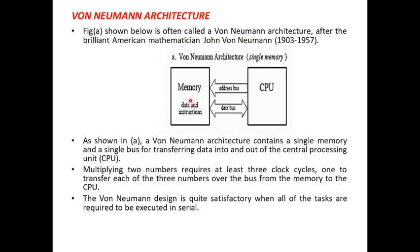In von Neumann architecture, data memory and program memory are the same. In order to multiply two numbers, we require at least three clock cycles — one for fetching data, one for fetching the program instruction, and the third for performing the operation and storing the result into the CPU. This von Neumann architecture is quite satisfactory when all tasks are executed serially.